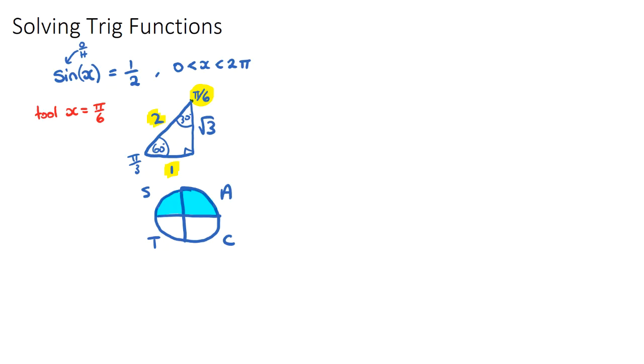So our answers within our domain, which is one full circle, because this is 0, pi on 2, pi, 3 pi on 2, 2 pi, will be pi on 6 up in either of these two quadrants.